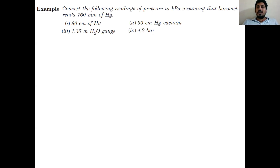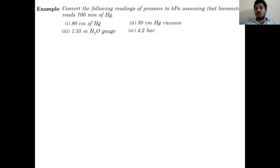Read it carefully. Convert the following readings of pressure to kilopascal. You have to convert the pressure value into kilopascal, assuming that the barometer reads 760 mm of Hg.